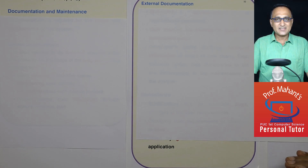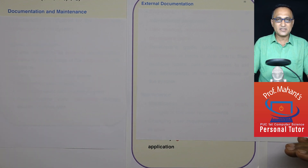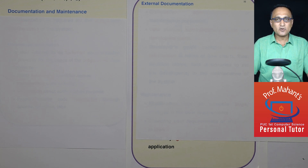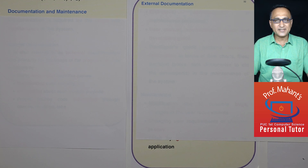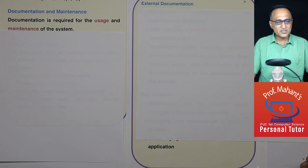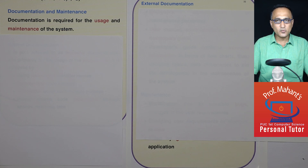In developing a software application, the last phase happens to be documentation and maintenance. Documentation is important because people who are going to work on the software after you are no longer working on it require help. The users should know how to use it, and the administrators should know how to set that application up so that other people can use it. Documentation is required so that the application can be used, modified, and maintained in future.